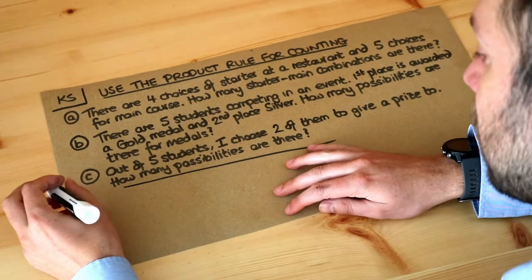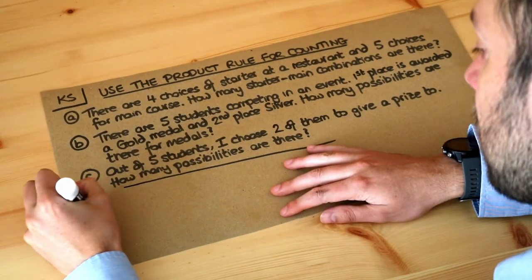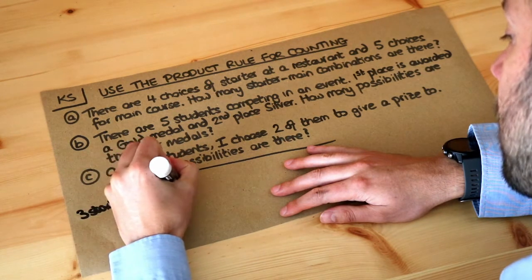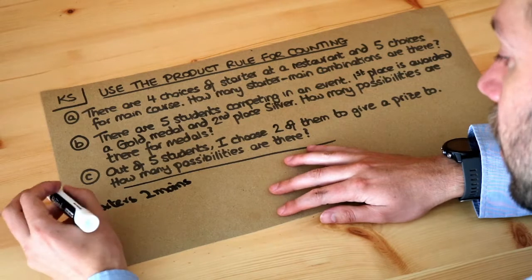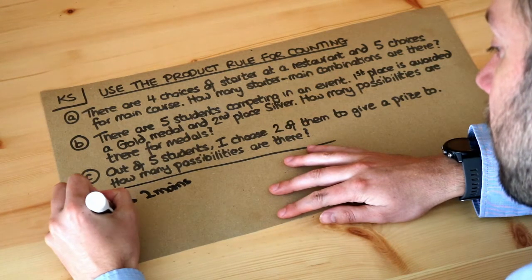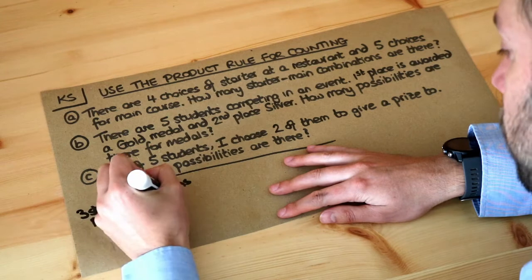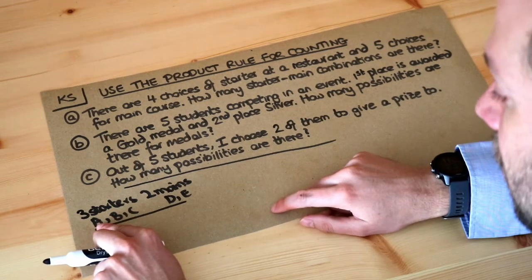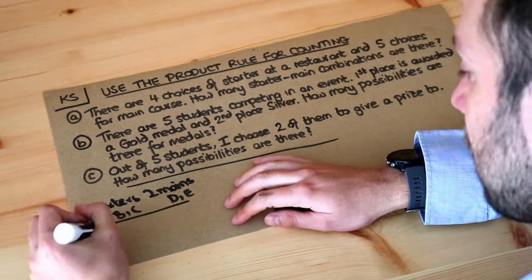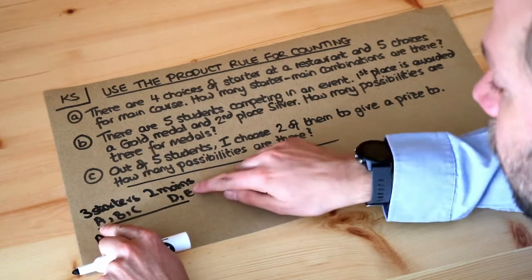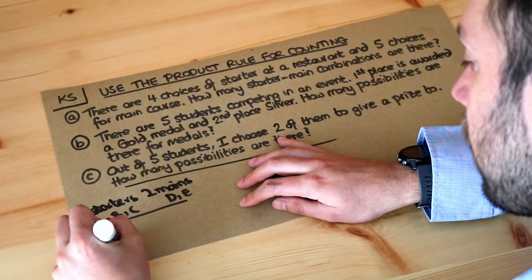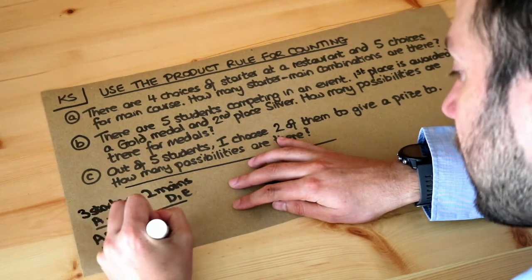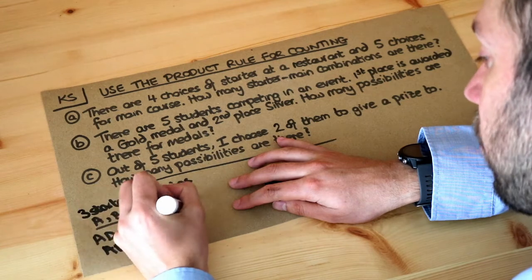Well let's just say it was simpler and we had just three possible starters and two main courses. Let's say that the starters were A, B, and C and the two different mains were called D and E. Then if we were to work out all the different possibilities well we could have a starter of A with a main of D so let's write AD, or we could have AE, or we could have BD, or we could have BE, or we could have CD, or we could have CE.